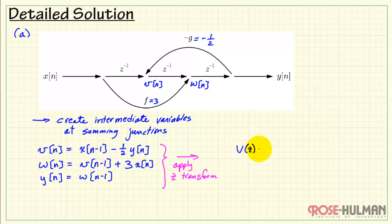Let's apply the z transform to all three of these equations. Now, x of n minus 1 comes across as x of z times z to the minus 1. This would be minus 1 half times y of z. Now we have w of z times v of z times z to the minus 1 plus 3 times x of z. And similarly, y of z is w of z times z inverse.